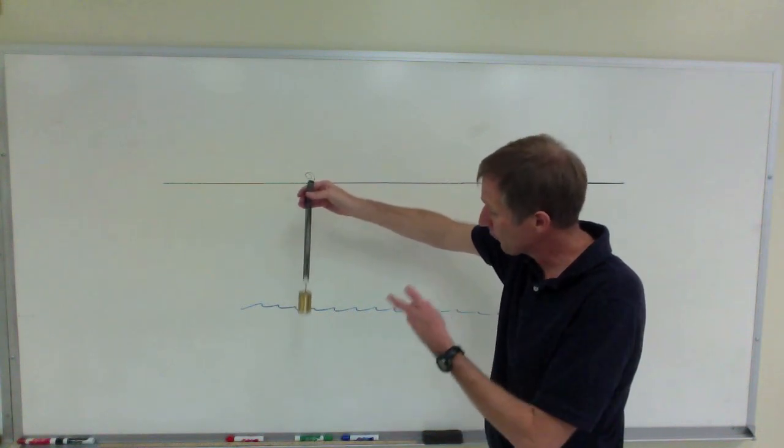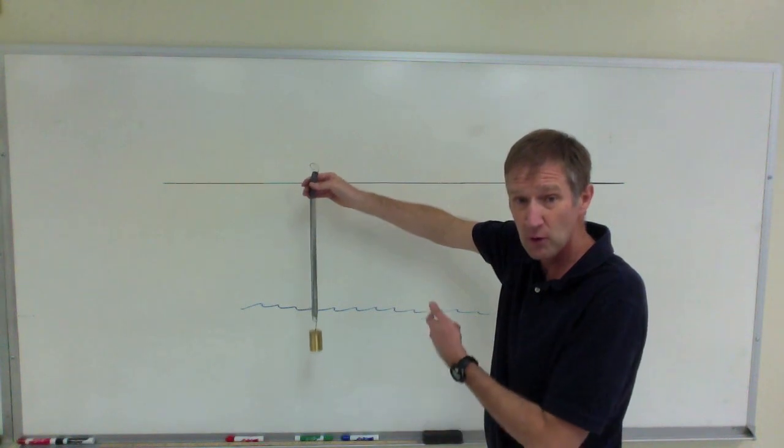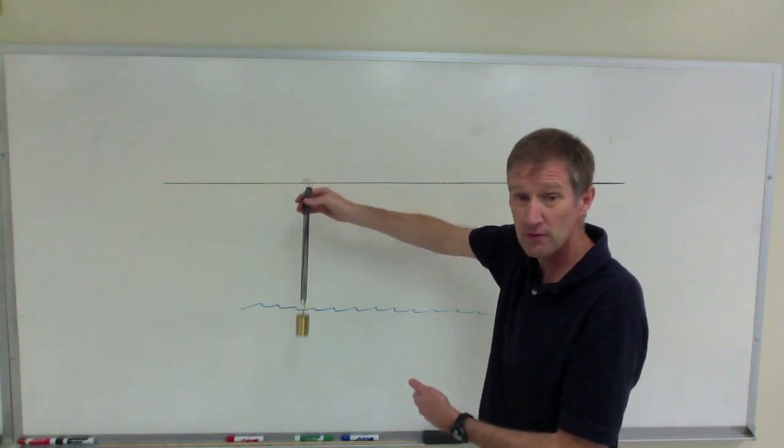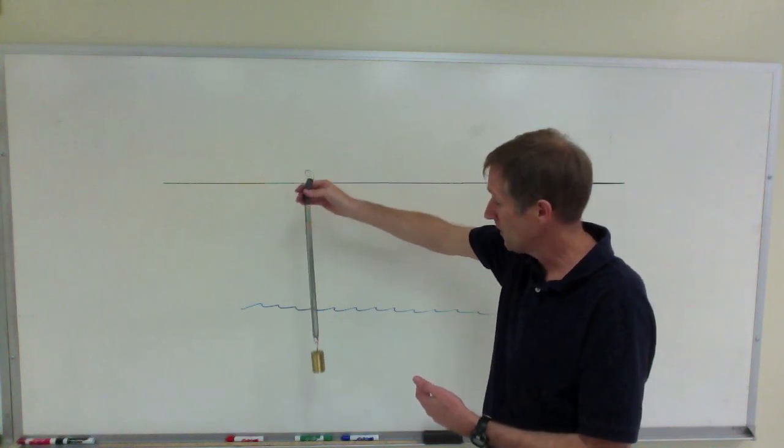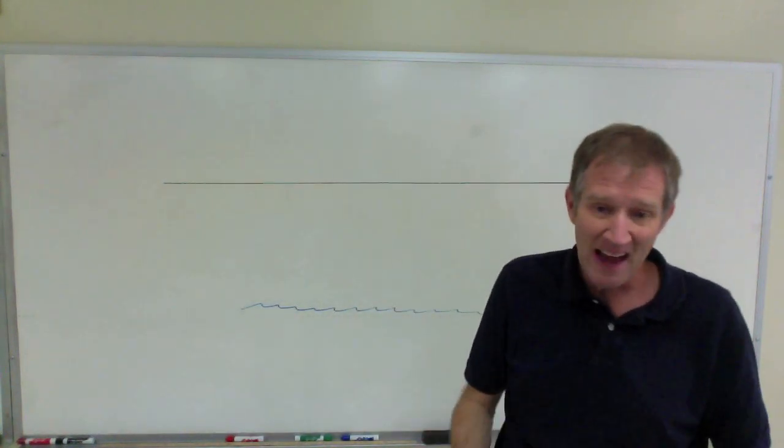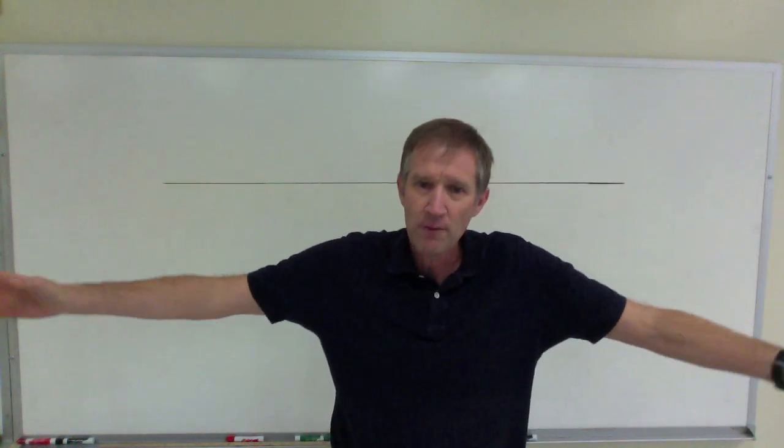And so the frequency of this bobbing mass on a spring is going to be the same as the frequency of the water waves that are going to go away from the source of disturbance due to this disturbance.